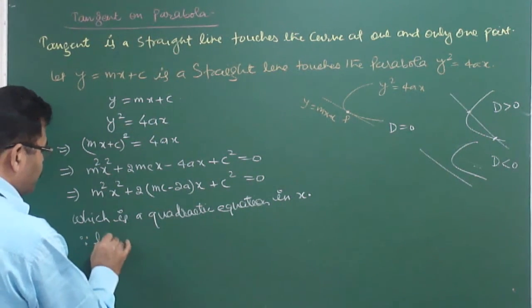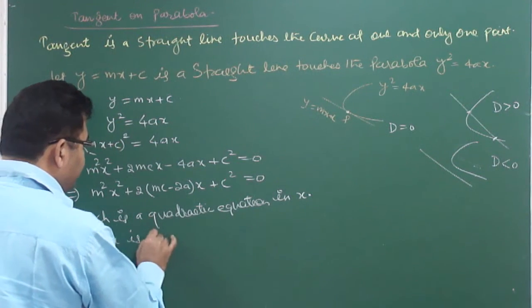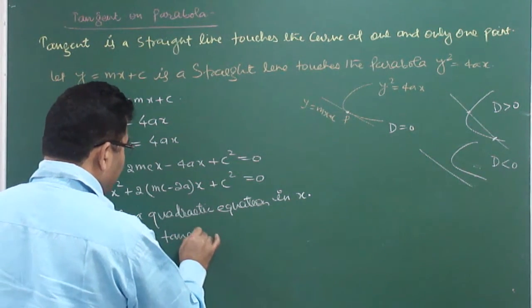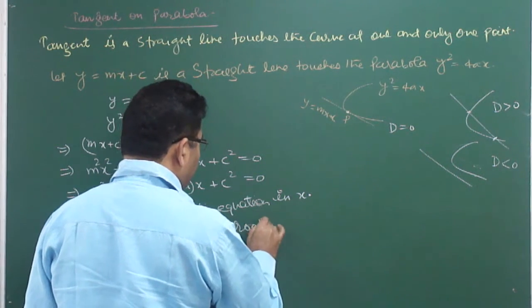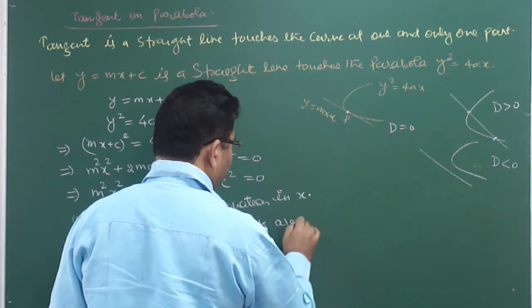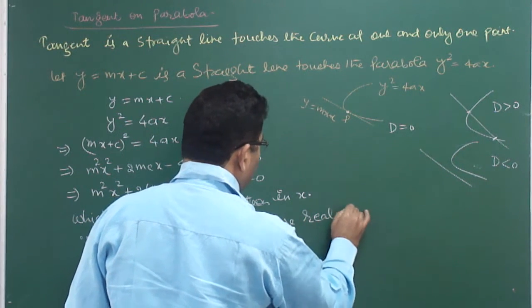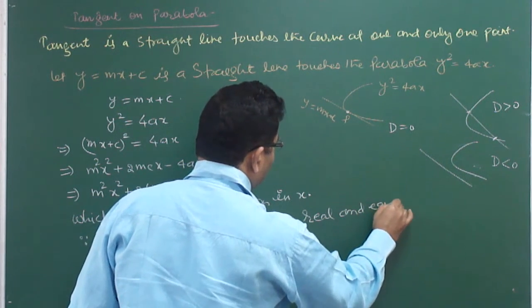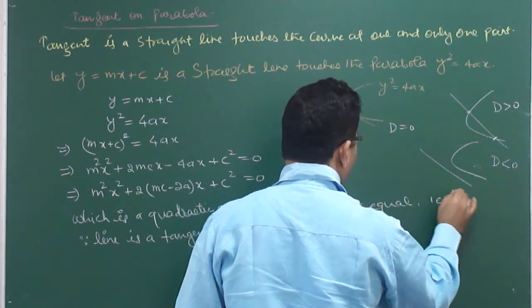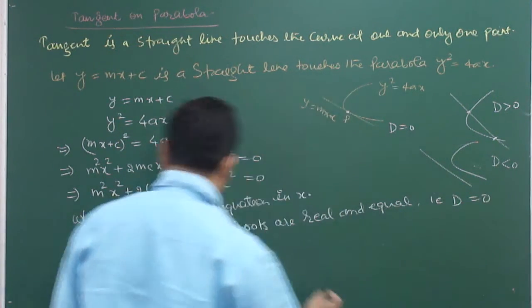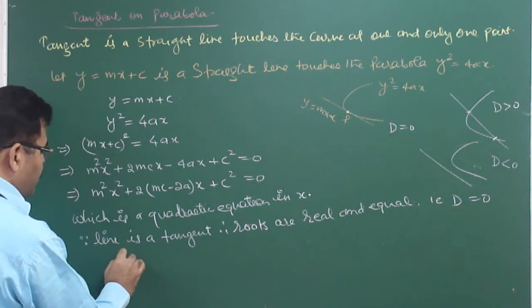Since the line is a tangent, the roots must be real and equal. For real and equal roots, D must be equal to zero.